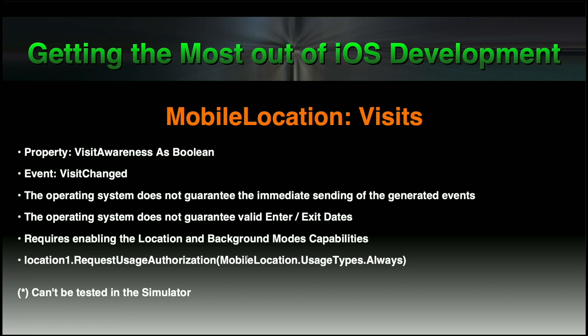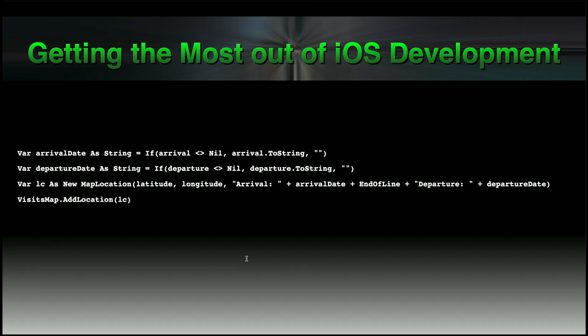Related to geofencing are Visits. Visits is a good feature because you only need to set the VisitAwareness boolean to true on the Mobile Location instance and everything else is managed by iOS itself. iOS raises the VisitChanges event on the Mobile Location instance. Visits are basically the way iOS provides to track the presence of the device during a certain amount of time at each location, making it a good way to track where the device was during a day, a week, or a month. In combination with Map Location instances, you can combine visits with map locations to automatically add them to a map without writing a line of code.